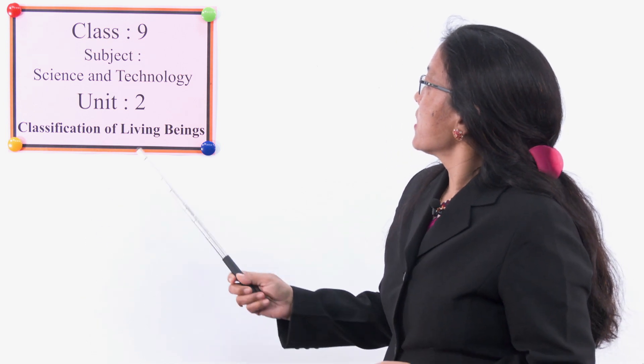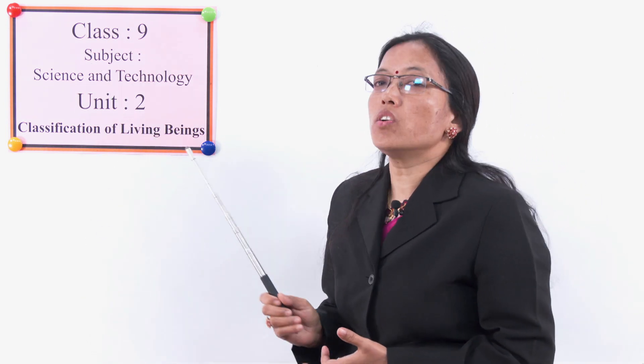Namaskar dear students, today we are going to discuss about Class 9 Science and Technology, Unit 2: Classification of Living Beings. We have already discussed the binomial system of nomenclature, where we learned how to name organisms. Today we are going to discuss the five kingdom system of classification.